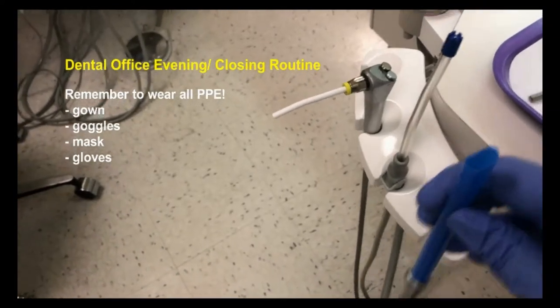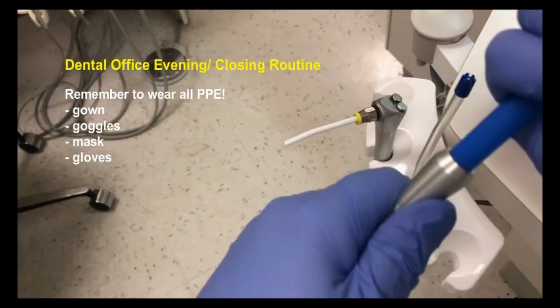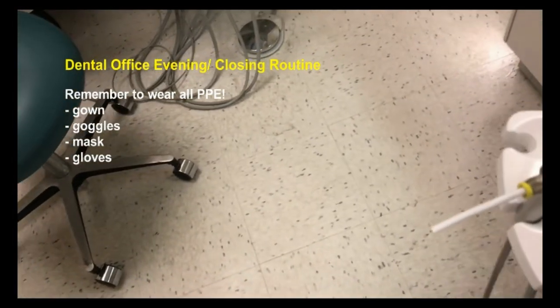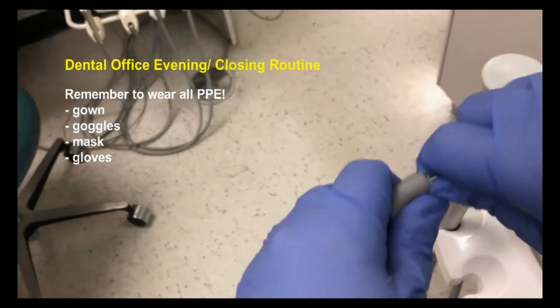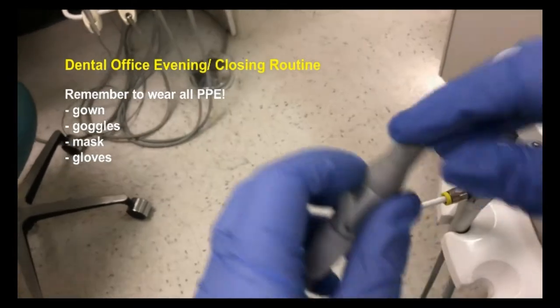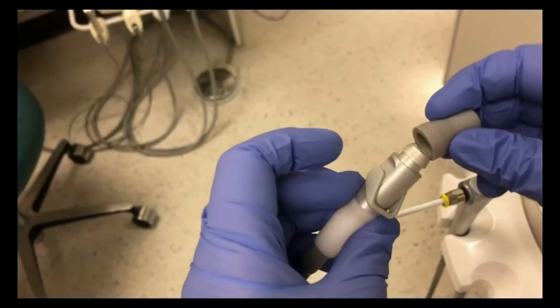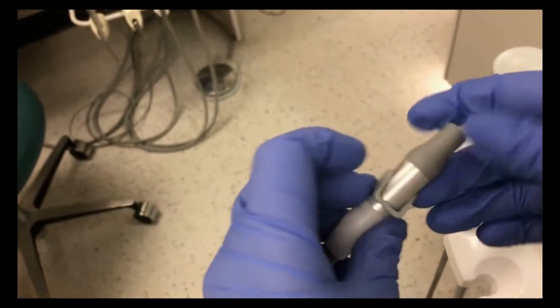During the evening routine you'll need to remove all of your disposable tips. Just pull the tips out of the HVE and the saliva ejector. If the gray silicone tip accidentally comes off when you pull off the saliva ejector, just place it back on the saliva ejector attachment.